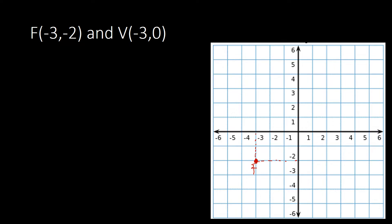For the vertex at (−3, 0), x is negative 3 and y is 0, so we do not move up or down. Since the focus is at the bottom of the vertex, the parabola is opening downward.